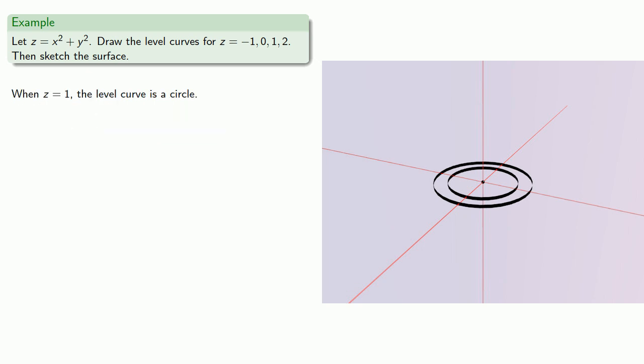When z was equal to 1, the level curve is a circle. And because z is equal to 1, this circle is at height z equal to 1. So we'll raise that circle up a bit.